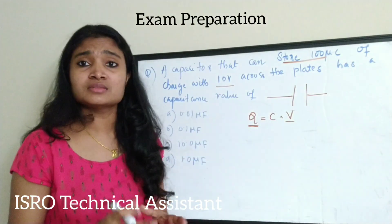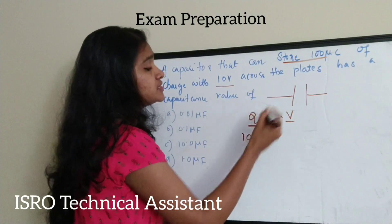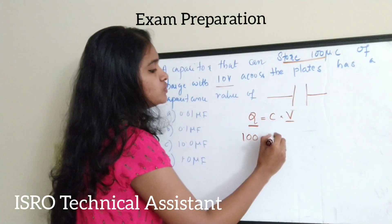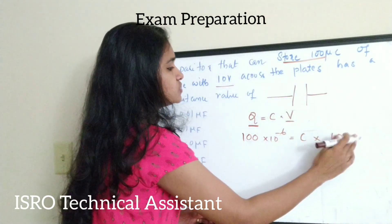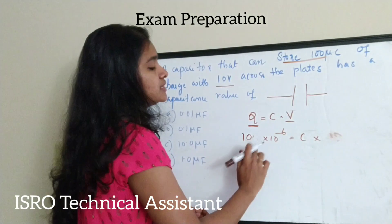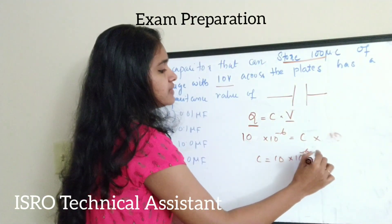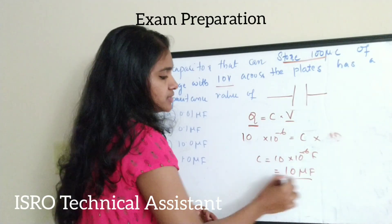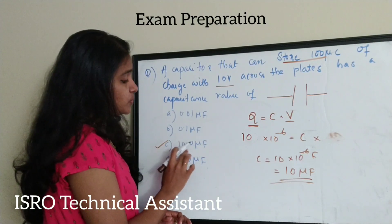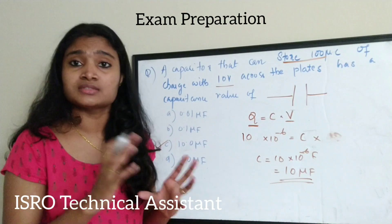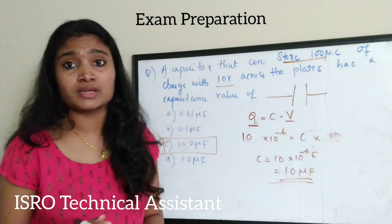This question will take maximum 2-3 seconds to answer. The value of Q given is 100 micro coulombs, that is 100 × 10⁻⁶, equals C × V, where V is 10. So C equals 10 × 10⁻⁶ farads, which is 10 micro farads. The correct answer is option C, which is 10 micro farads.